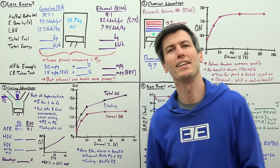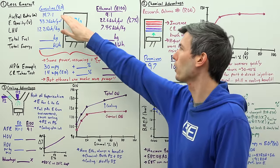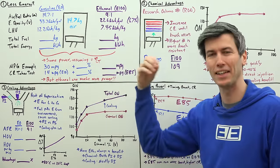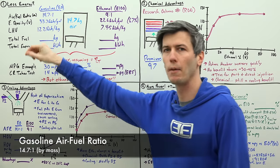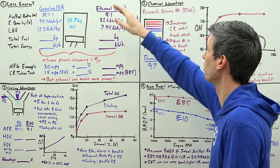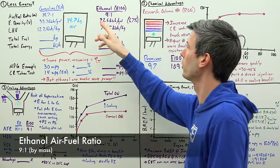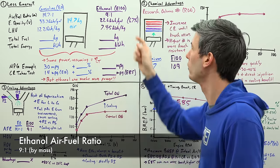The first thing we need to understand is that these two fuels have very different air-fuel ratios. If we look at pure gasoline, in other words E0 meaning 0% ethanol content, it has an air-fuel ratio by mass of 14.7 parts air to one part fuel. If we look at pure ethanol E100, it has an air-fuel ratio of 9 to 1. So it's significantly lower, meaning you're going to be using more ethanol for the same amount of air as you would with gasoline.